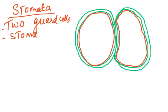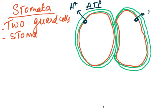In the cell membrane — the green is the cell wall and the red is the cell membrane — we have proton pumps. These proton pumps are ATP-powered and they pump out hydrogen ions. This is active transport, happening on both sides of the guard cells.